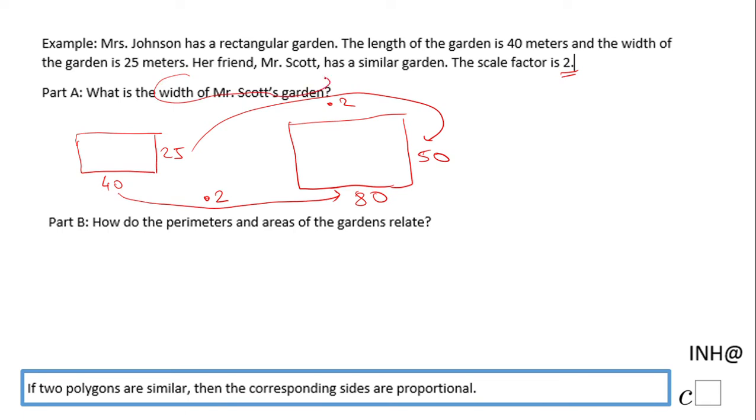So the width of Mr. Scott's garden is 50 meters. Let's go to Part B: How do the perimeters and the areas of the gardens relate?